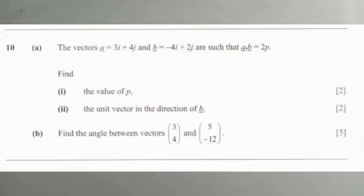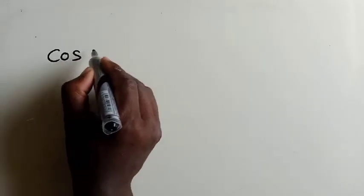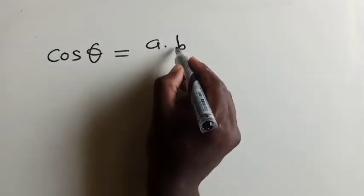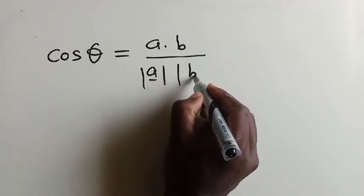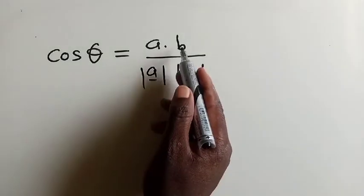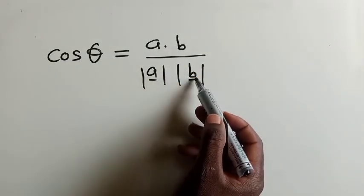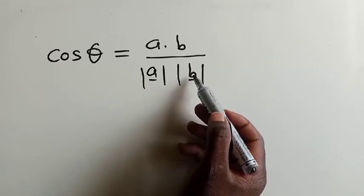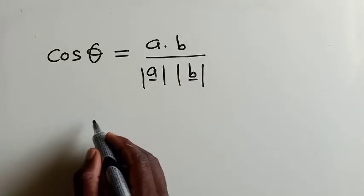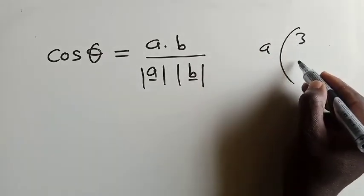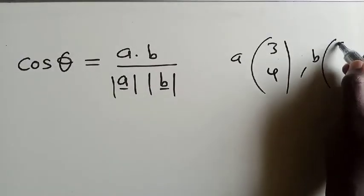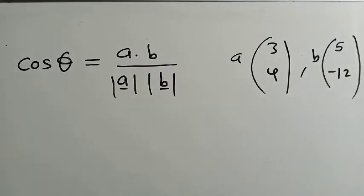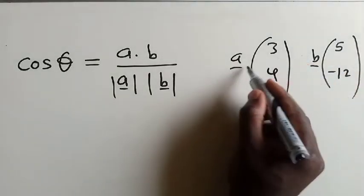For question B right here, we've been told to find the angle between vectors. So to find the angle between vectors, we need to know this formula. This is the formula we have to know. So on top here, it's a dot product. Right here is magnitude of vector A and magnitude of vector B. So we say our A is right here, 3, 4, and our B will be 5, negative 12, according to what we've been given. So this is our vector A and vector B.